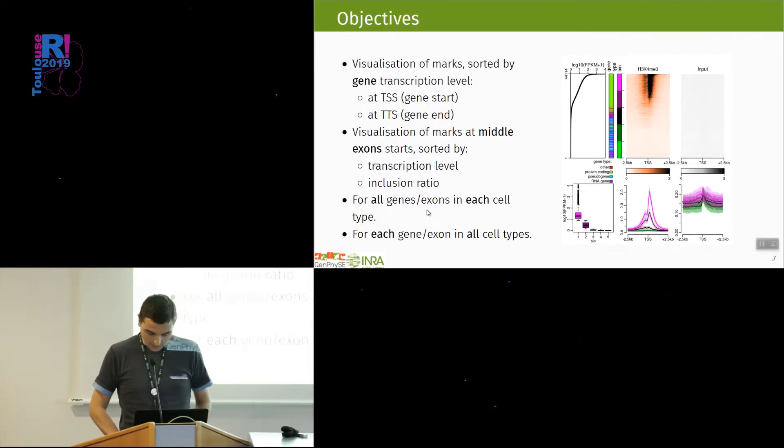What we wanted to do was to come back to data visualizations and simple regression of this data. What we have done is looking at the marks sorted according to gene expression, and we looked at the gene start or gene promoter or transcription start sites, the gene end or transcription termination sites, and we also looked at middle exons, so not the first exon, neither the last exon because those are TSS and TTS. We sorted those exons by expression level or inclusion ratio to see if there was any link between epigenetic marks and alternative splicing. We have done two different analyses, one looking at all genes or exons within each cell type, and the other looking at each gene or exon individually across cell types.